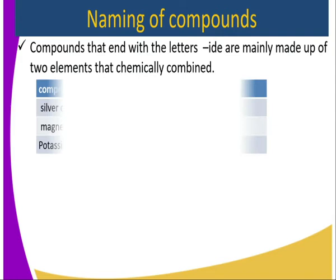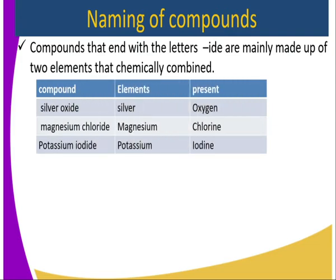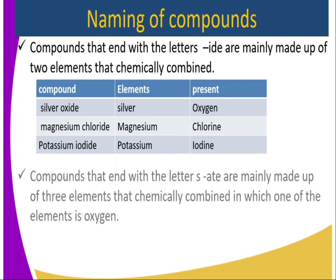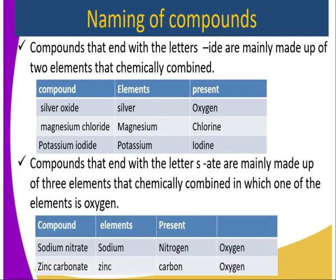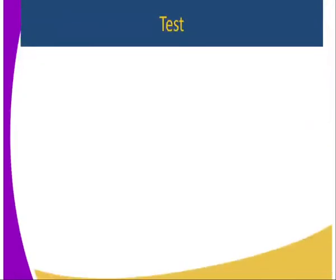For example, silver oxide contains silver and oxygen; magnesium chloride contains magnesium and chlorine; potassium iodide contains potassium and iodine. Compounds ending with the letters '-ate' are mainly made up of three elements chemically combined, one of which is oxygen. For example, sodium nitrate contains sodium, nitrogen, and oxygen; zinc carbonate contains zinc, carbon, and oxygen.